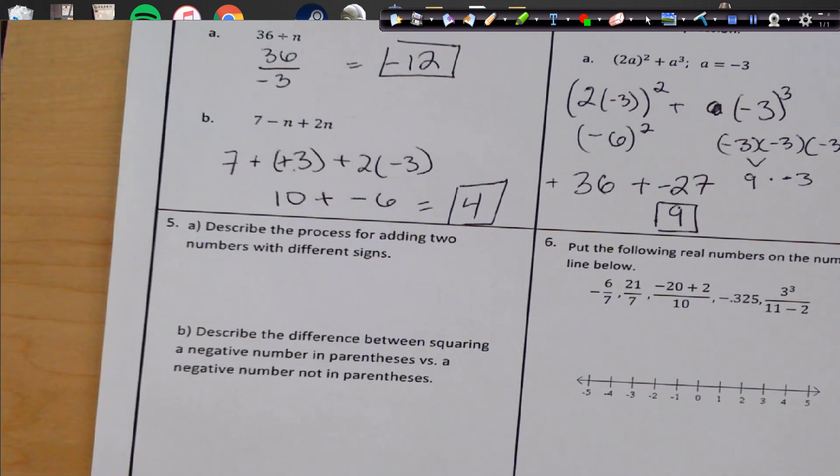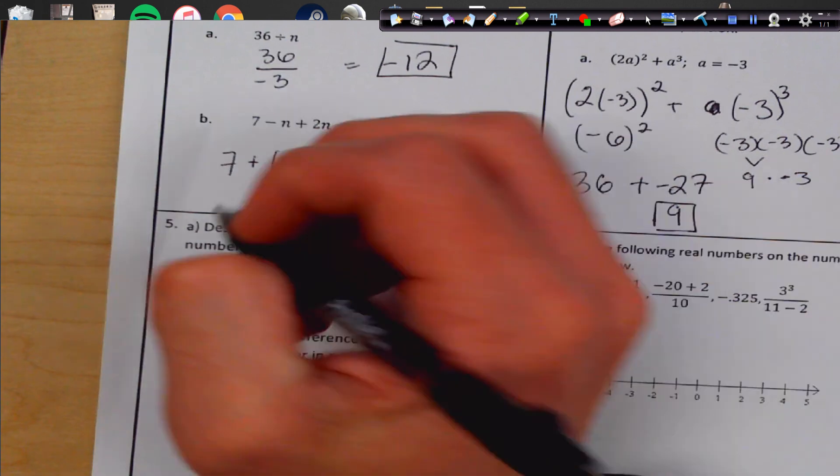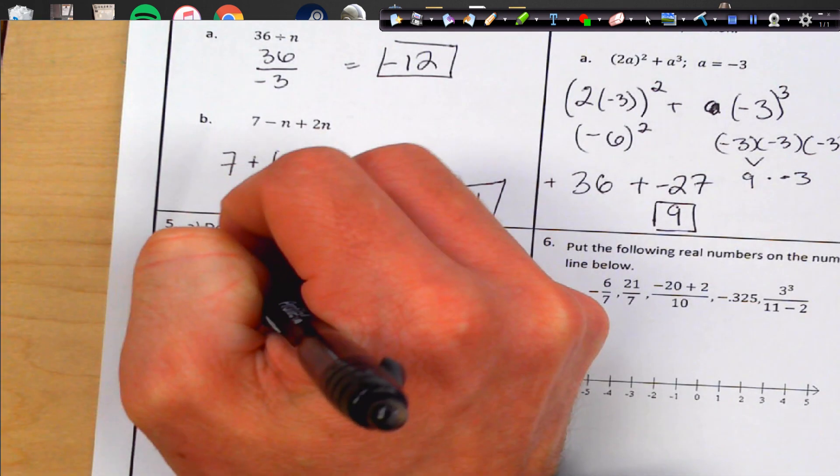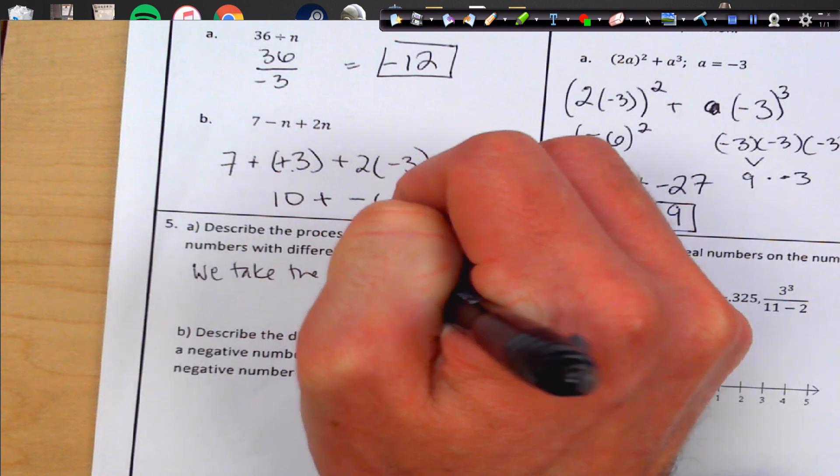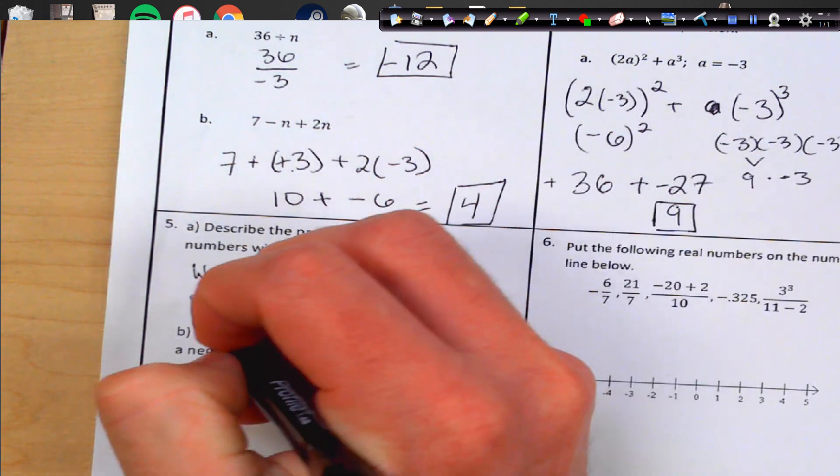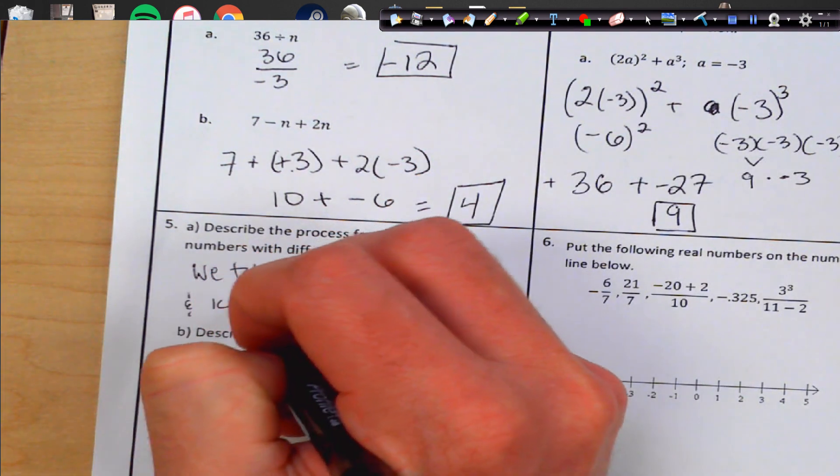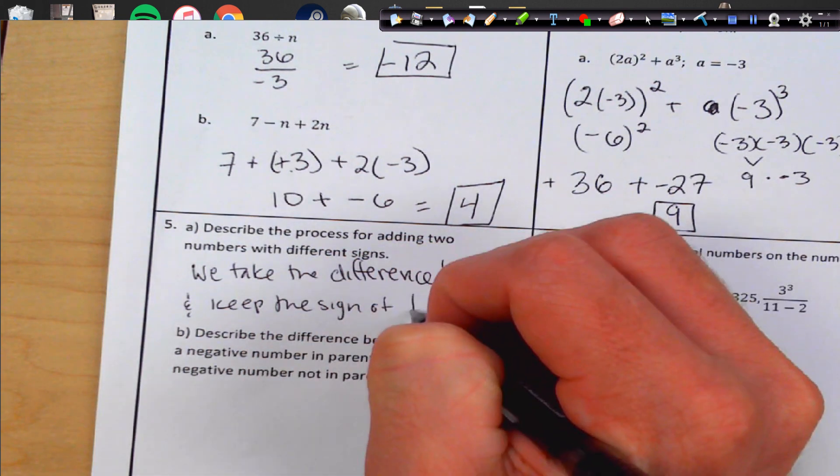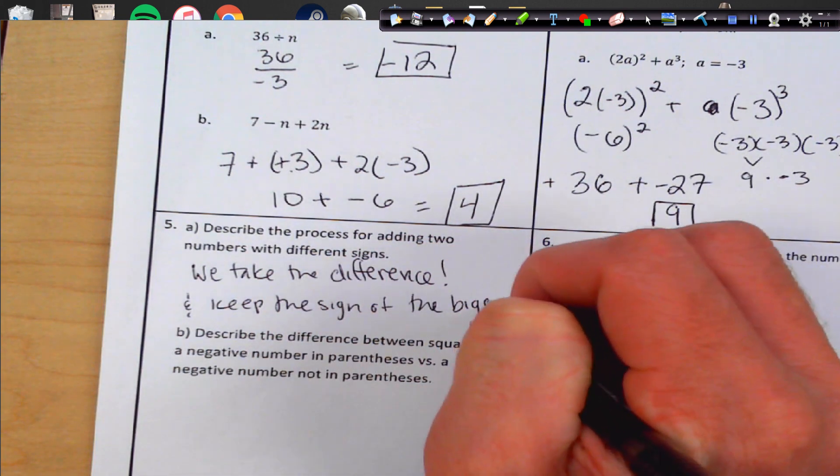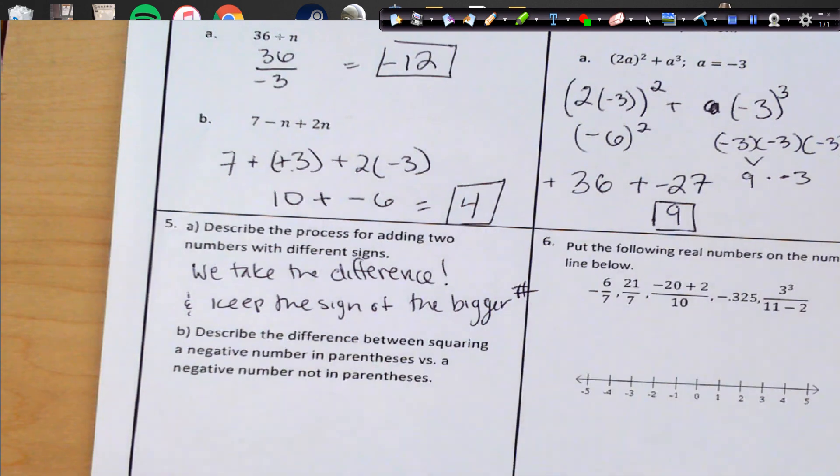Number 5, describe the process of adding 2 numbers with different signs. So we add 2 numbers with different signs. We take the difference and keep the sign of the bigger number.